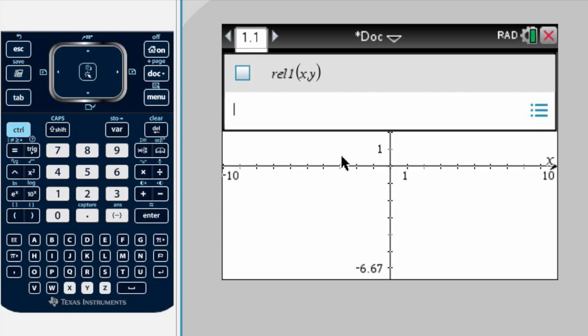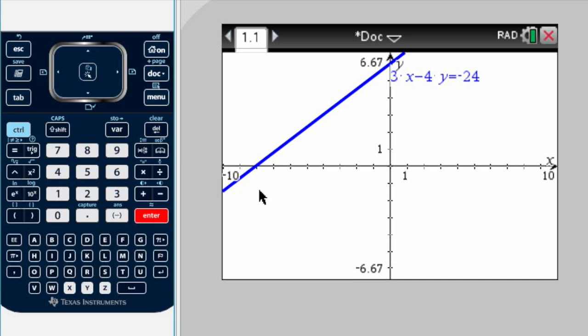Now we're going to write our equation: 3x minus 4y equals negative 24. After we write our equation, we press enter. We will see the graph, the line of our equation.